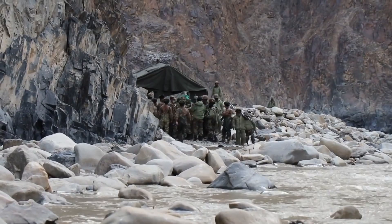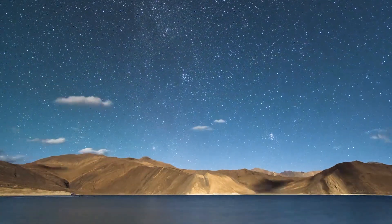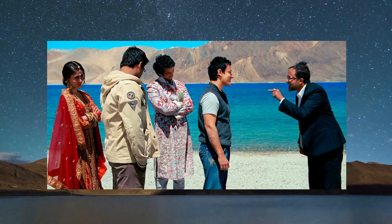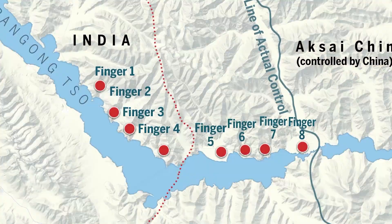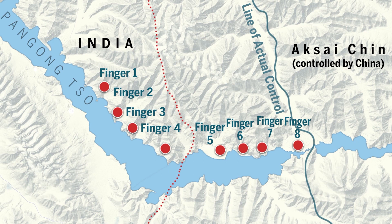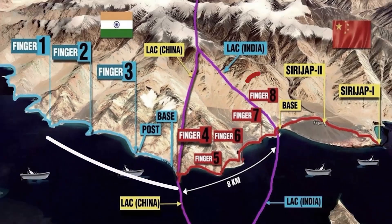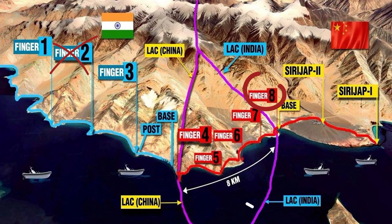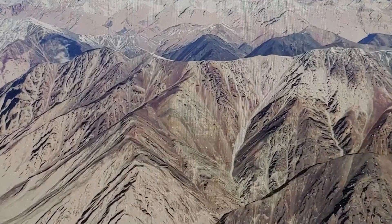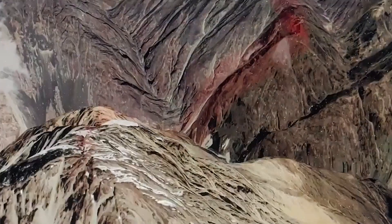The Ladakh confrontation happened between the two armies in two places. First is the Galwan River Valley, and the other is Pangong Lake. Pangong Lake — which you may have seen in the movie Three Idiots — is 130 kilometers long and 5 kilometers wide. The LAC passes through the middle of this lake, and the lake has finger-like edges called 'fingers.' India claims the LAC lies at Finger 8, making Fingers 1 to 8 Indian territory, but China claims it lies at Finger 2. The confrontation happened in this gray area between Fingers 2 and 8, when Chinese troops crossed past Finger 8 and came towards Finger 2. The Galwan Valley was an area where both borders were clearly demarcated and agreed upon, yet hand-to-hand combat took place when Chinese troops violated their own claimed line.